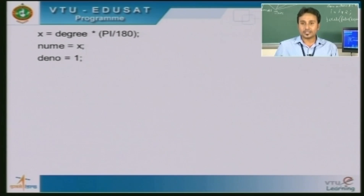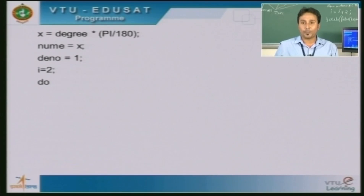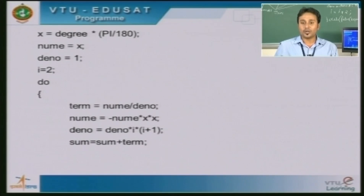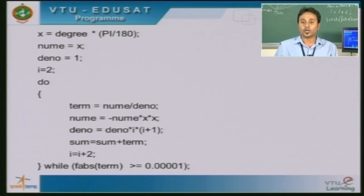Next, numerator is equal to x and denominator is equal to 1. This is used for the very first term in our sin series, which stands for x by 1 factorial. Since the first term has already been defined, we start from the second term, hence i is equal to 2. Next comes our do-while looping construct: term equals numerator by denominator; numerator equals minus numerator multiplied by x multiplied by x; denominator equals denominator multiplied by i multiplied by i plus 1; sum equals sum plus term; i equals i plus 2; while fabs of term is greater than or equal to 0.0001.